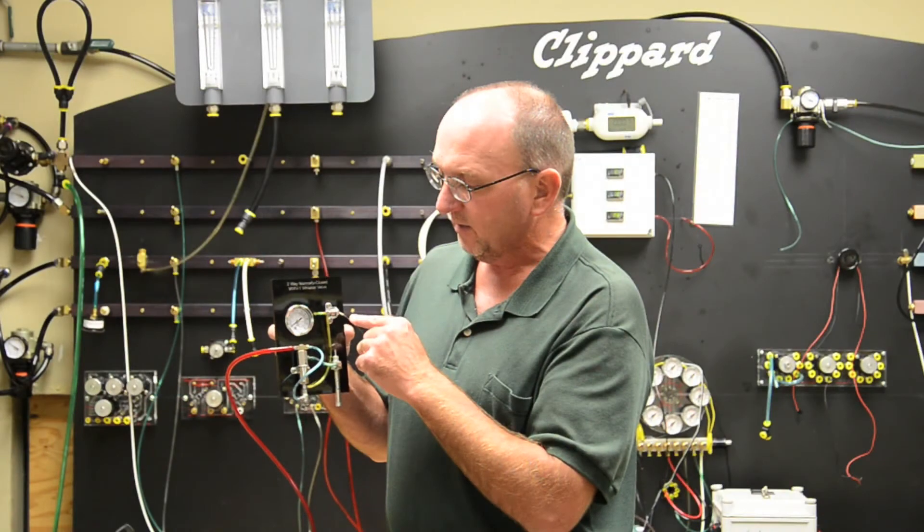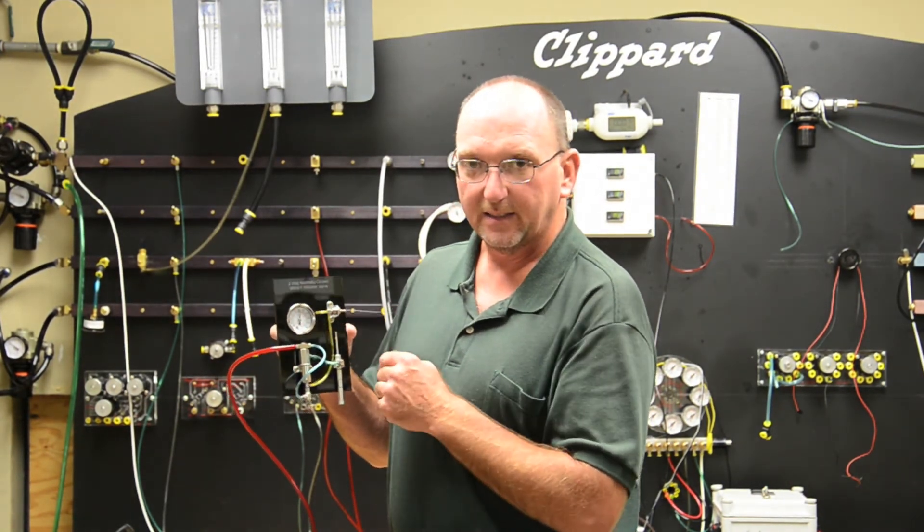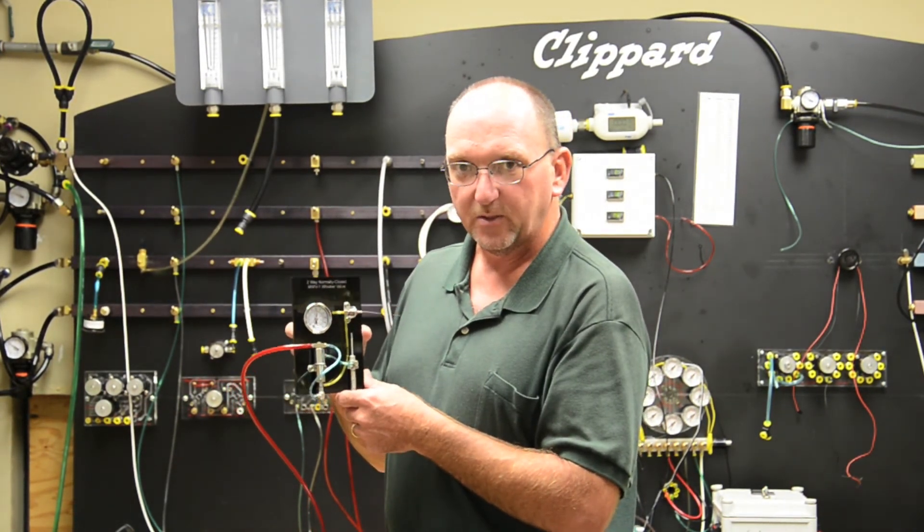You can notice in the gauge how the pressure is dropping to zero allowing that bleed to occur. That's Clifford's MWB-1 Miniature Whisker Valve.